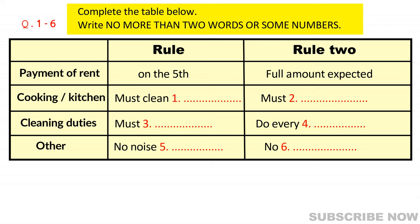Dirty tenants — those who just allow dirt and dust to build up around the house and don't care less — we've got to have a strict rule prohibiting that. What about a cleaning roster? We can make a list of everything we expect to be done: carpets vacuumed, furniture dusted, toilet cleaned, and so on. Everyone is required to take turns — first my turn, then your turn, then the third tenant's turn. This spreads the load so we can keep the apartment very clean.